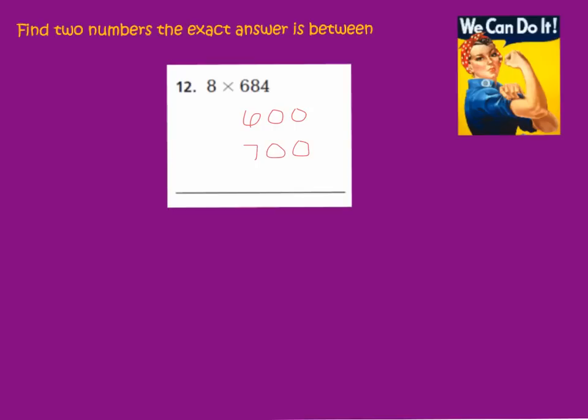Now, we can multiply our 600 and our 700 times the 8. And we will have two estimates. Let's go ahead and multiply. We have 8 times 6 is 48, with our two zeros for our place value holders. So we have 4,800. And 8 times 7 is 56, with our two zeros for our place value holders. And we have 5,600. So we have two numbers that our exact answer should be between. 4,800 and 5,600.